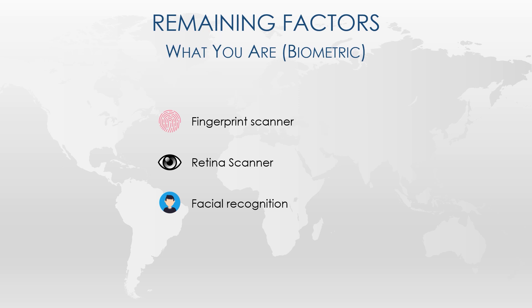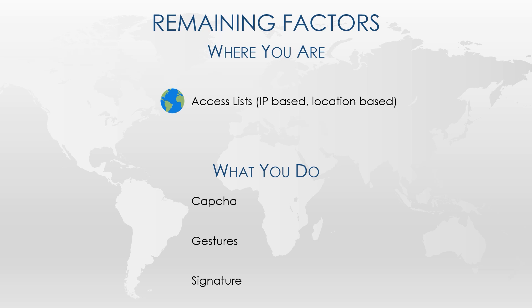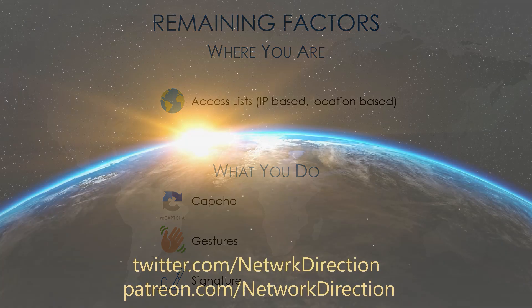Traditionally these are the three factors of authentication, but some people like to consider two more. The first is where you are — this could be something like an access list on a firewall restricting logins to certain locations, however that doesn't really prove your identity, so I think it's a bit of a stretch. The other is what you do, which has some relatively new applications — this is something that you do uniquely, like a signature. Some technologies like CAPTCHA can look at details like how you move your mouse, which a robot would find hard to forge, though these are more focused on proving that you're human rather than who you are.